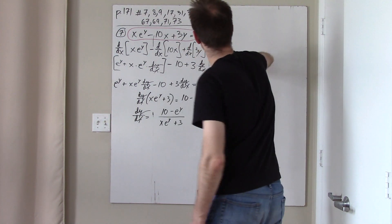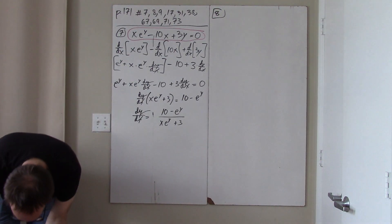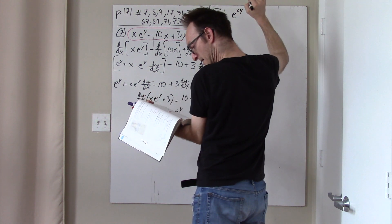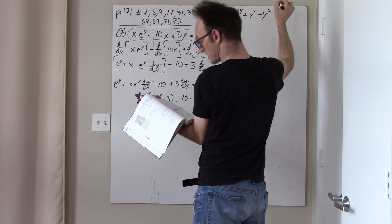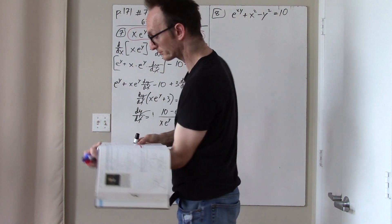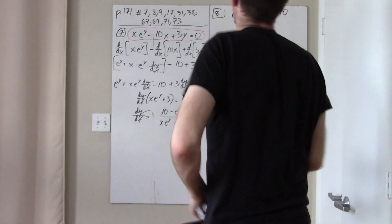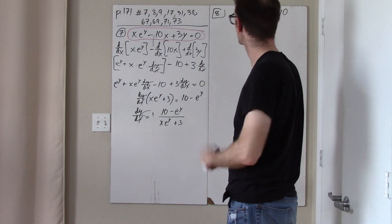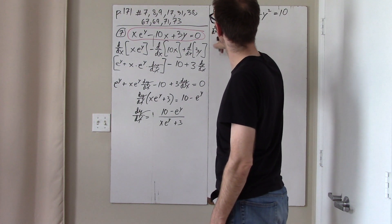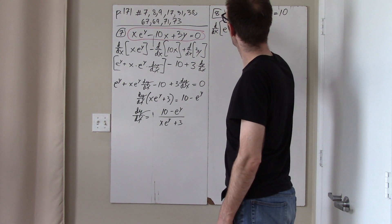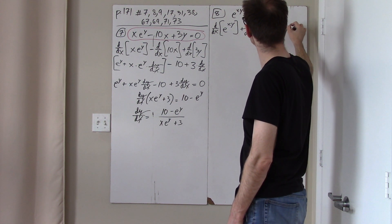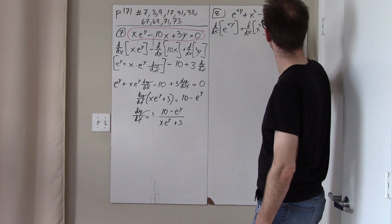Problem 8: e^(xy) + x² - y² = 10. I have no idea what this curve is — you could type this into Desmos or something and get a picture of the graph. Let's just differentiate both sides with respect to x. I need the derivative of e^(xy), the derivative of x², the derivative of y², and the derivative of 10 just gives zero.